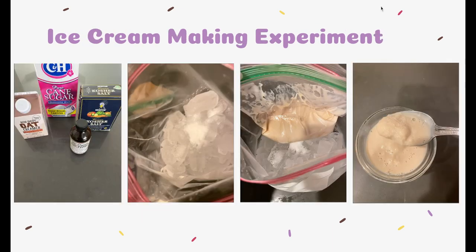In the ice cream making experiment, I used one cup of creamer, two tablespoons of sugar, and a teaspoon of vanilla, along with ice and salt. I added the ice and salt into a bag and put the other ingredients in a smaller bag inside the ice. I shook it for seven to ten minutes to form ice cream. Because the freezing point was lower in the ice, it helped freeze the liquid substance in the smaller bag.